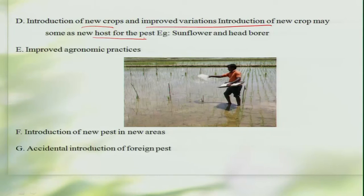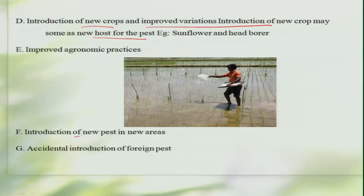Improved agronomic practices such as fertilizer application also play a role — we know that more and more nitrogenous fertilizer applied to crops like paddy leads to the development of newer pests such as leaf folders, brown plant hoppers, etc. Then the introduction of new pests into new areas, and the introduction of foreign pests, are very classic examples. When insects not normally found in those areas are accidentally introduced, they find a good environment with no natural enemies, which gives a boost to their multiplication and they start becoming pests.